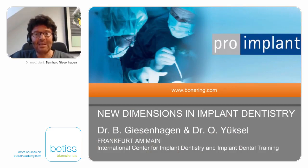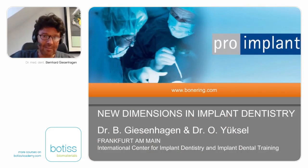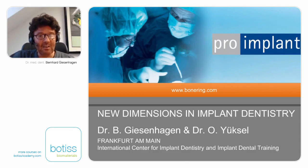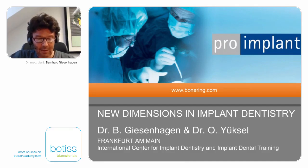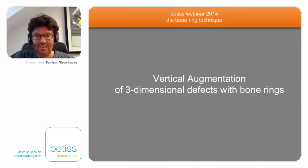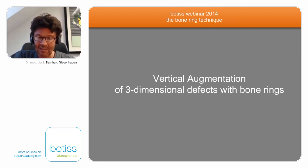Hello everyone. My topic today is the bone ring technique. We are located in Kassel and Frankfurt. Today's topic is vertical augmentation of three-dimensional defects with bone rings. When we talk about vertical augmentation, we are not talking about horizontal augmentation — horizontal augmentation is easily done with particulate bone graft material. We only discuss defects where we need to use a block.